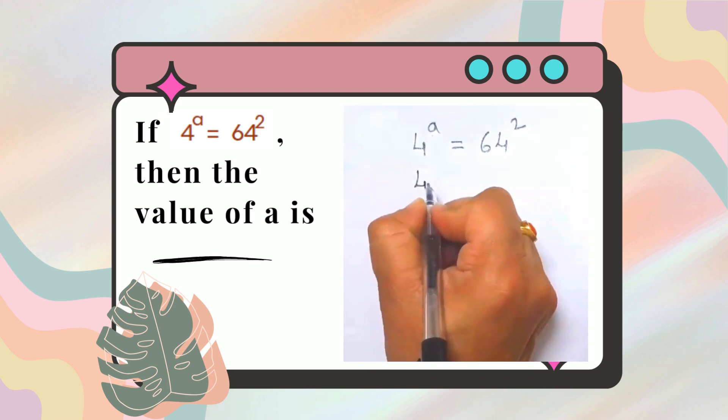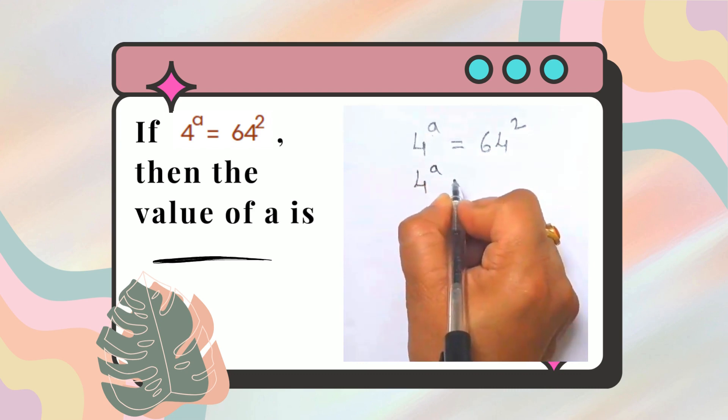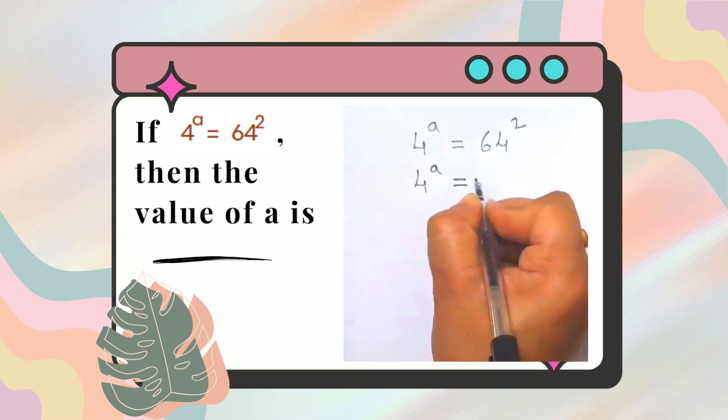In the first step, 4 raised to the power of A equals 64, which can be written as 4 cubed. 4 times 4 is 16, 16 times 4 is 64. So 4 cubed raised to the power of 2.